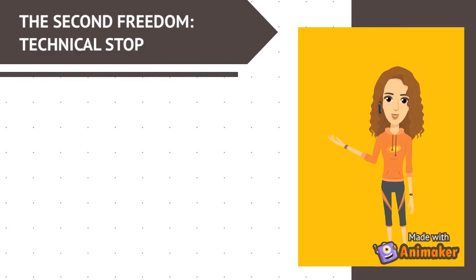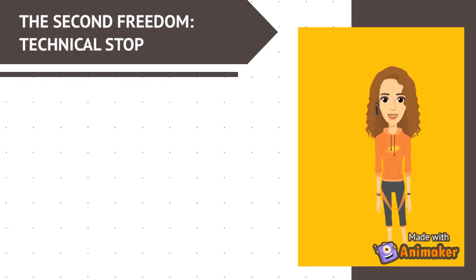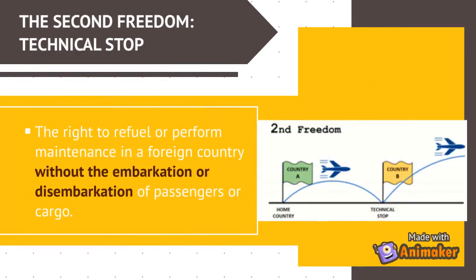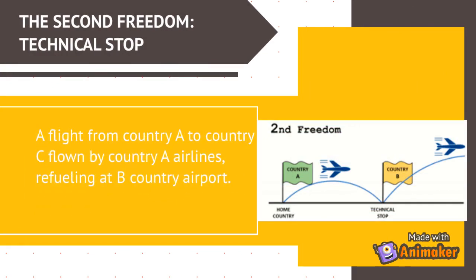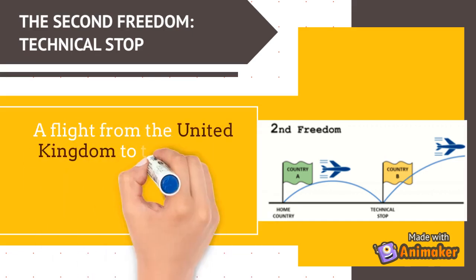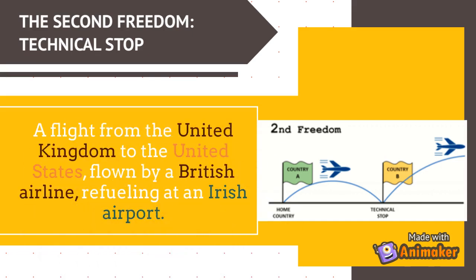The second freedom is the technical stop — the right to refuel or perform maintenance in a foreign country without the embarkation or disembarkation of passengers or cargo. For example, a flight from country A to country C, flown by country A's airline, refueling at country B's airport. A real example is a flight from the United Kingdom to the United States, flown by a British airline, refueling at an Irish airport.